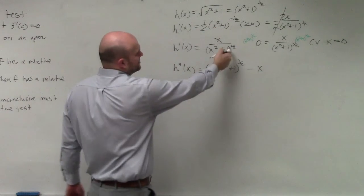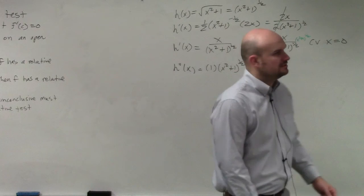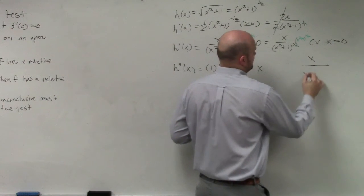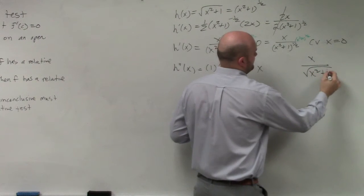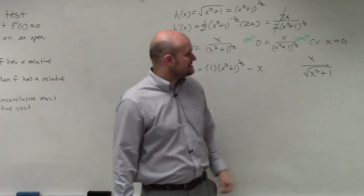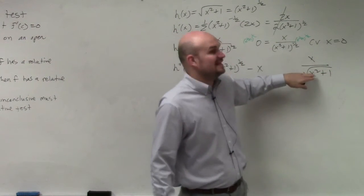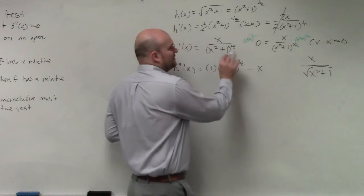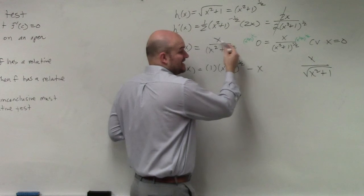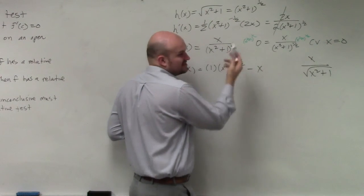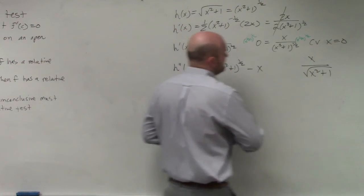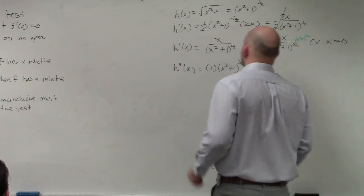These are under their radicals. Yeah, because they have the same base, but they're not the same power, and you can't distribute that 1/2 across addition. So it kind of ruins everything. So we're just going to have to fight our way through the quotient rule.